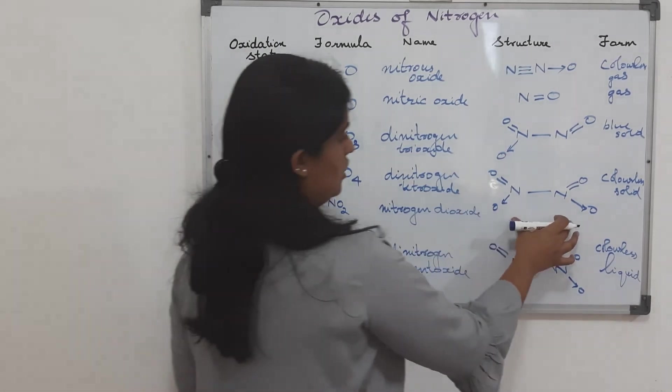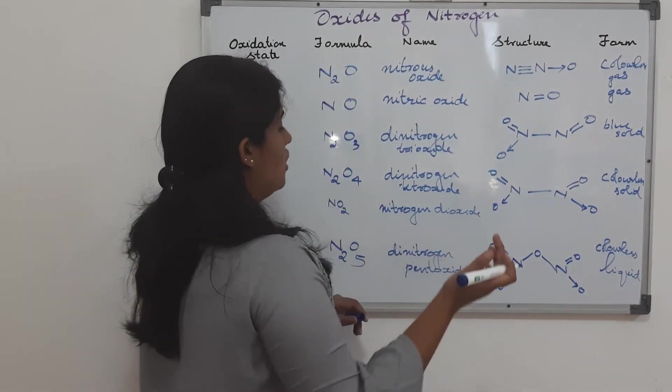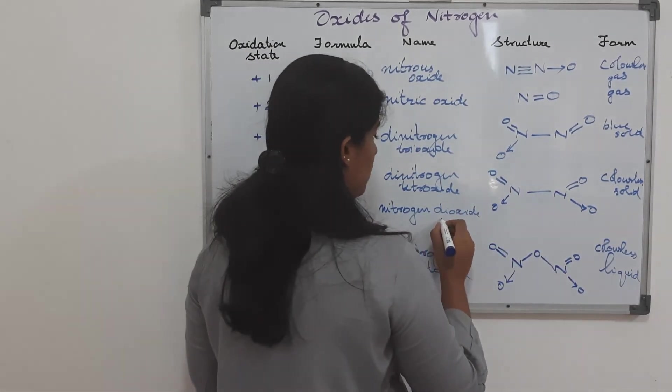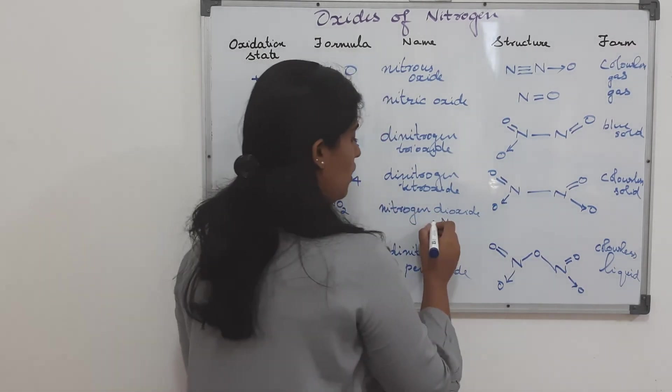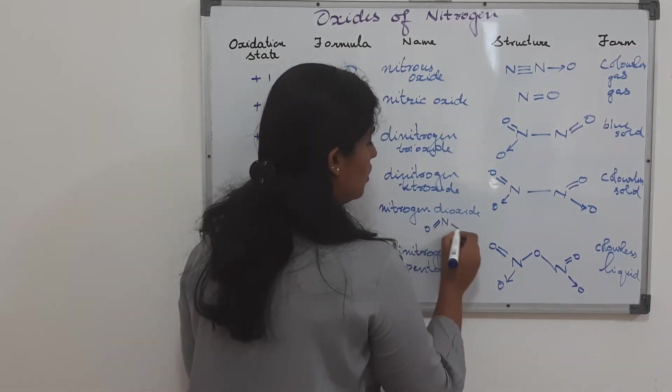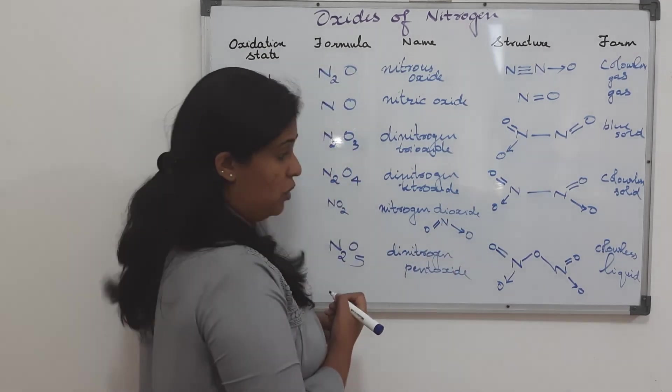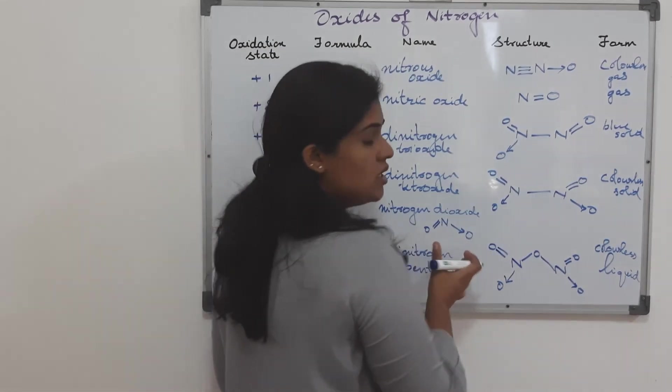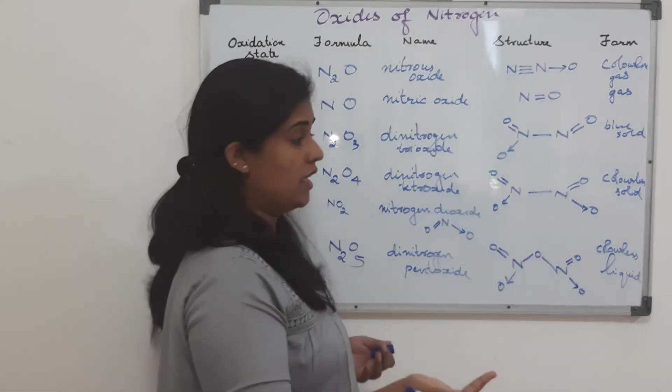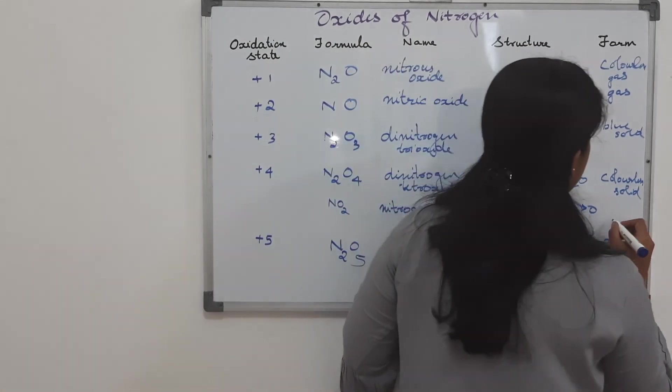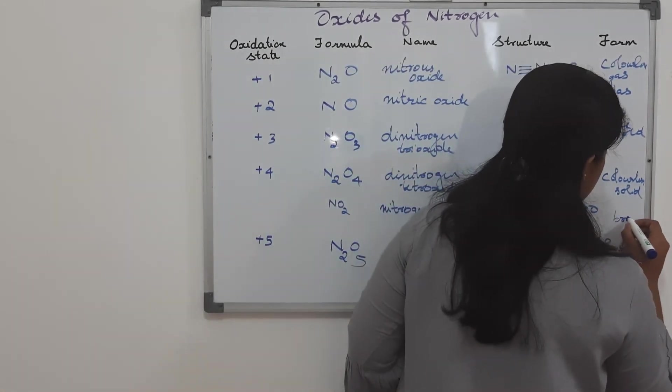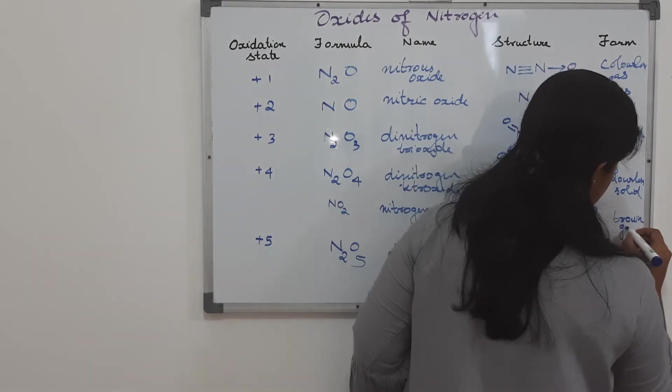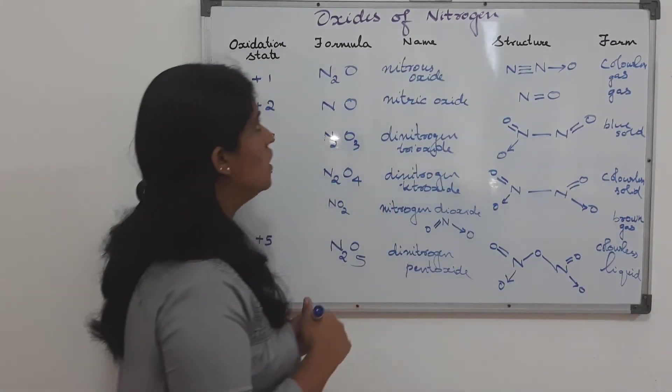And since space is not there, I will just draw the structures on here. Nitrogen dioxide, as we all know, has one nitrogen only and two oxygens. So, definitely, one of it will be double bonded. The other oxygen would be datively bonded. And this, as we know, nitrogen dioxide gas, it is a brown gas.